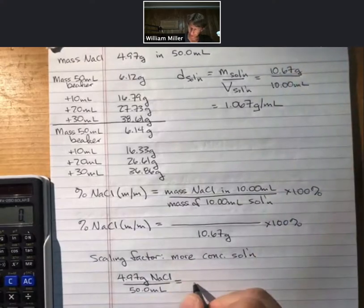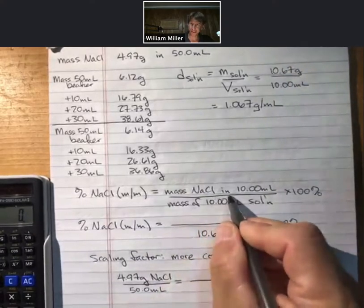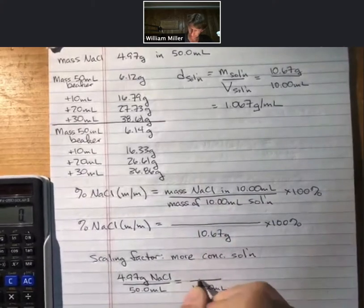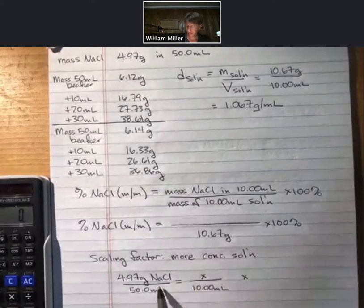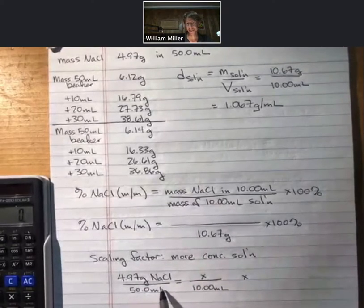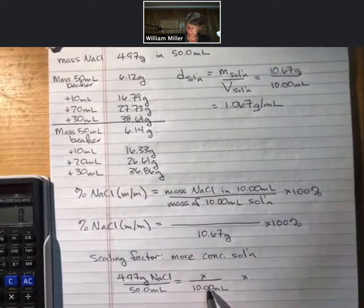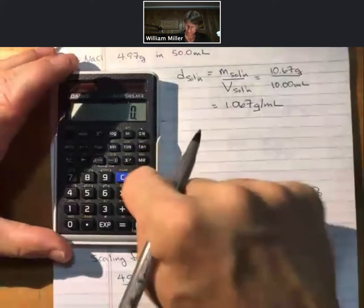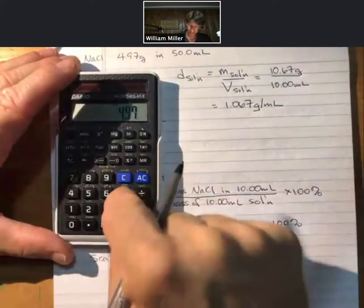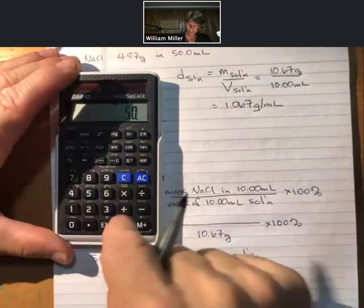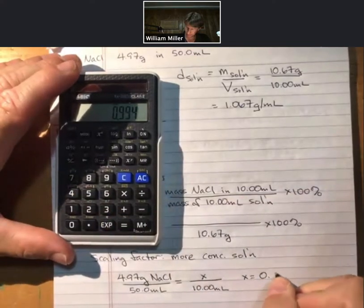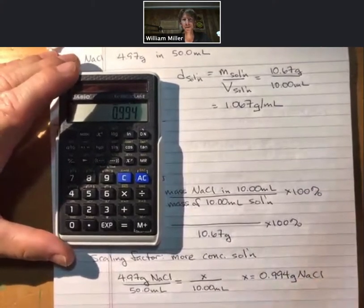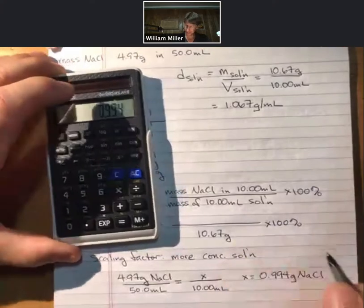Now, we're interested in the mass of sodium chloride in 10 milliliters. And what we'll have to do is we'll have to cross multiply to find our x. x will be our grams of sodium chloride in 10 milliliters. Let me multiply this out. 4.97 times 10 divided by 50: 0.994 grams of sodium chloride in 10 milliliters.